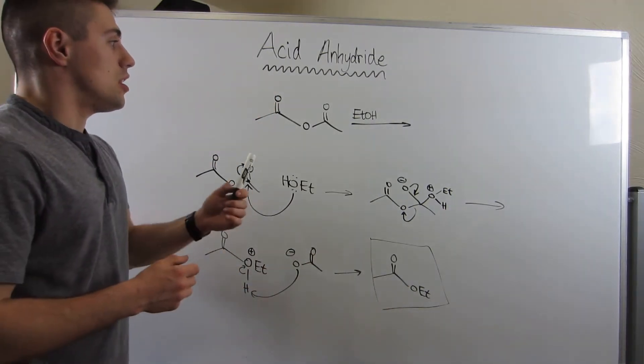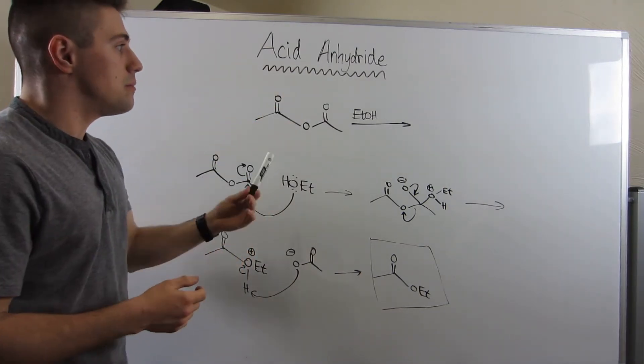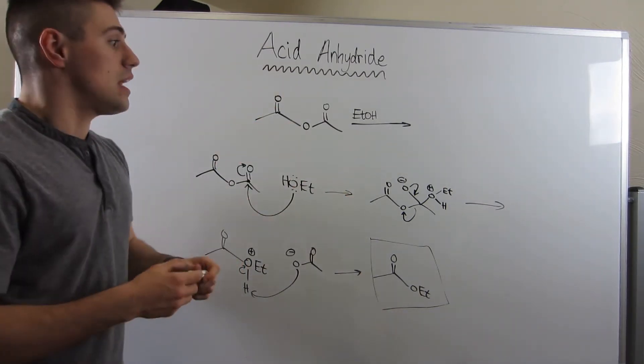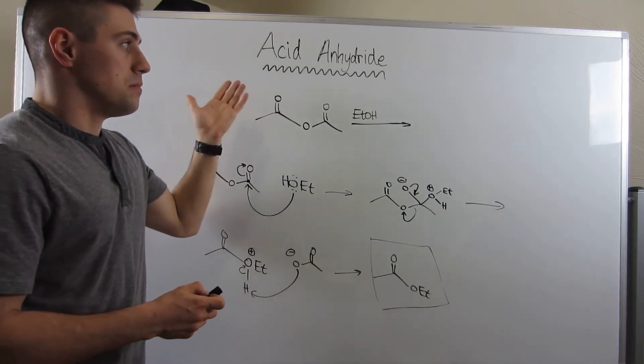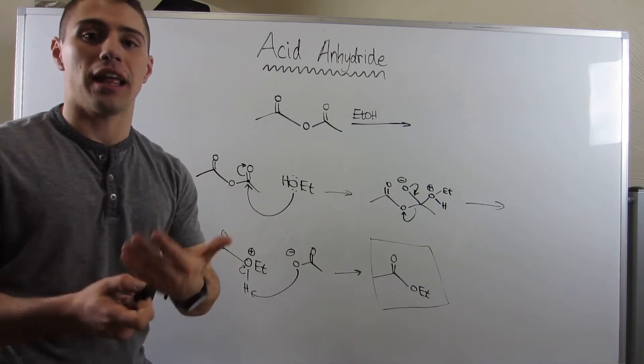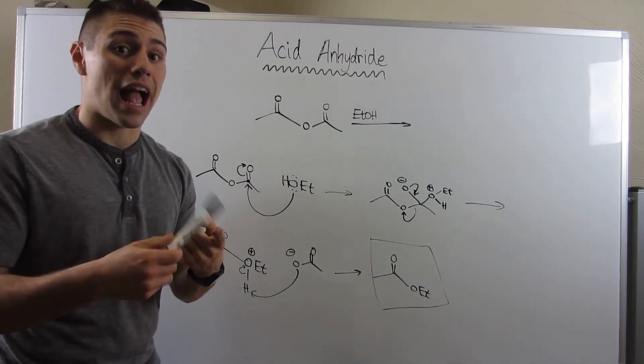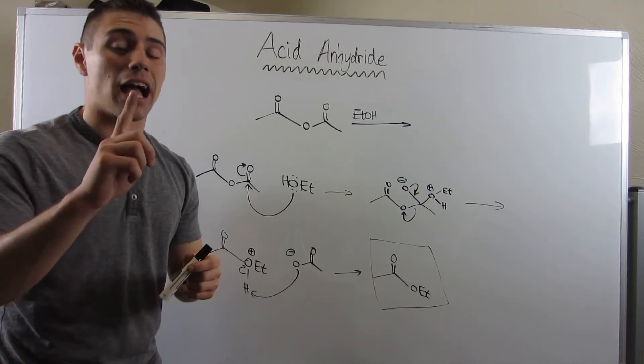So the beauty of this is, right, we can take acid anhydrides slash acid chlorides, and we can make esters out of them, right? If I threw in ethyl amine, I could make an amide. The possibilities are endless. You can mix and match. But just remember, they're going to be soft. They're going to act like soft nucleophiles. Attack occurs once.